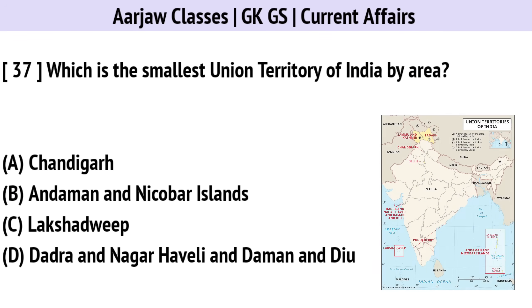Which is the smallest union territory of India by area? The correct option is C — Lakshadweep.